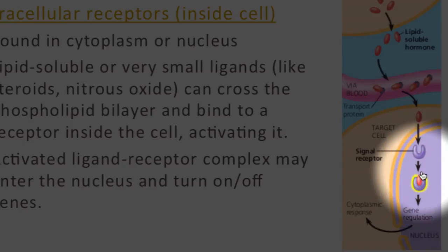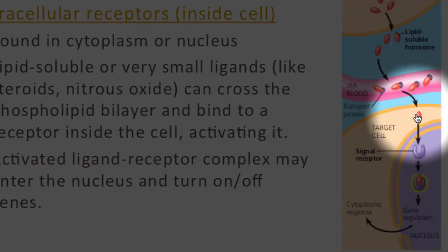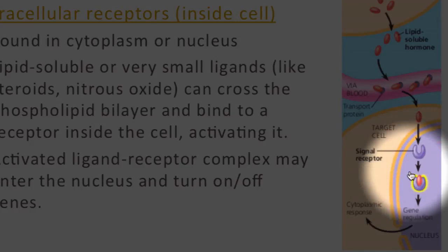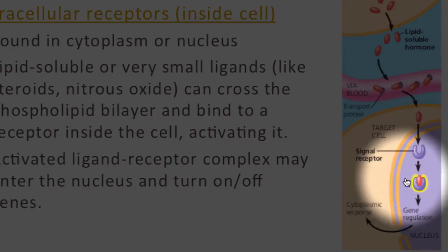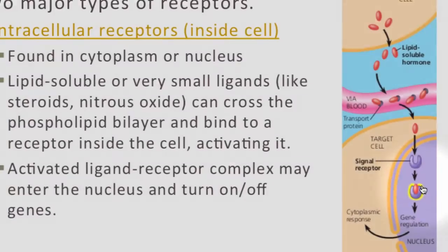So you can see here, this red thing is a ligand. It's able to enter the cell through the plasma membrane because it's lipid soluble or nonpolar, and it's really small. It binds to this receptor — this is called our activated ligand-receptor complex — and then that ligand-receptor complex can turn on or turn off different genes.